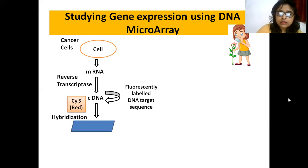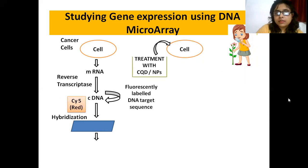As you can see in the slide, there are two cells. One is cancer cell and the other one. Both cells are cancer cells. One is normal cancer cell and another one is treated with carbon quantum dots. DNA microarray utilizes nucleic acid probes that are attached to a slide that hybridize with fluorescently labeled DNA target sequences that are then scanned and processed.